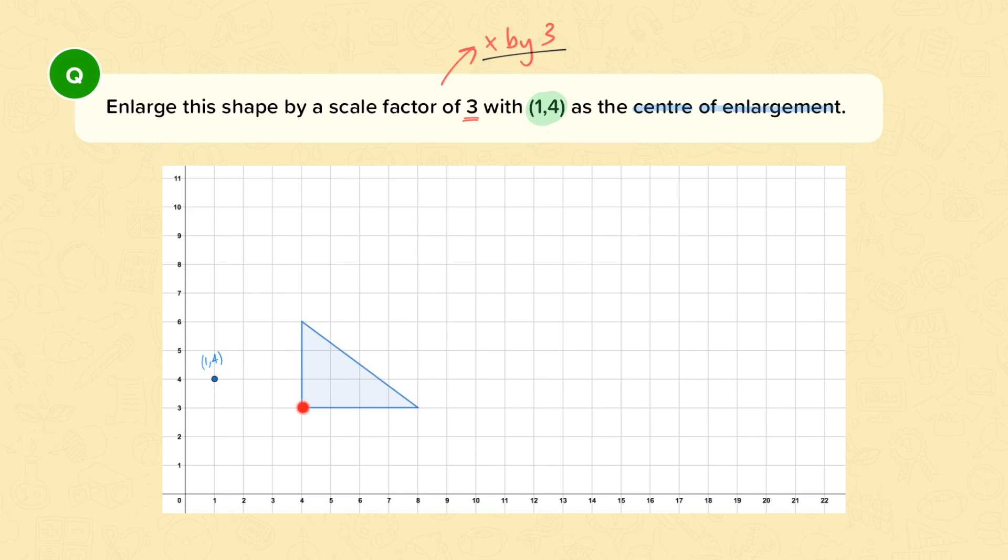Let's start with this vertex here. So we're going to count across: 1, 2, 3. And then we have to go down 1. Now everything needs to be multiplied by 3. So we're not going to go 3 along, but we're going to go 9 along, which will take us to 10. And then we're not going to go 1 down, we're going to go 3 down. 1, 2, 3. So this vertex is now here.